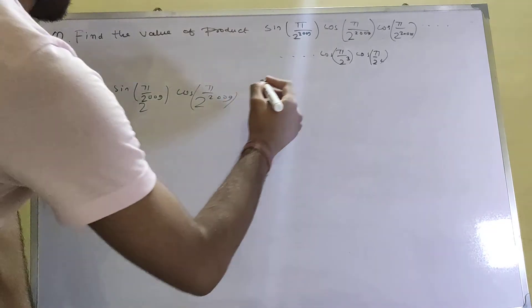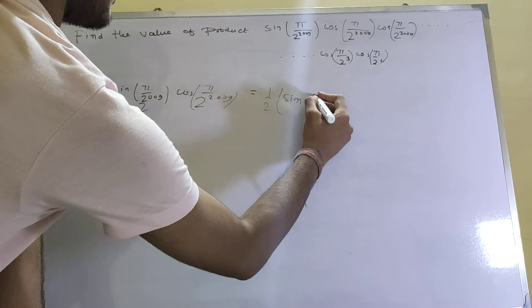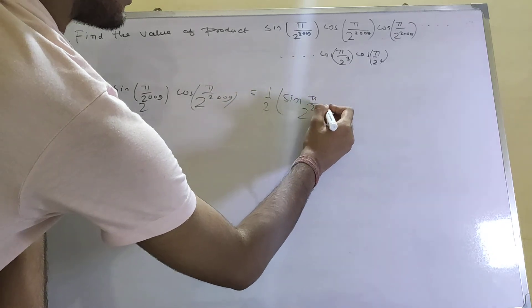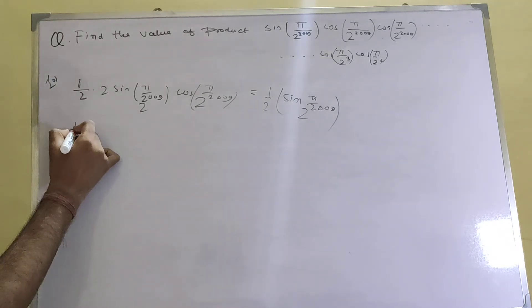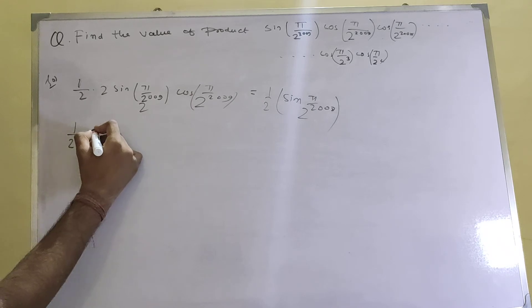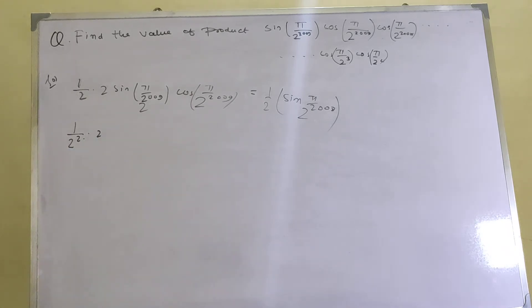We will again multiply and divide by 2, which will become 1/2² × 2sin(π/2)^2008 cos, which will basically be sin(π/2)^2007. This will continue until cos(π/2)², which are basically 2008 terms, so 2^2008.